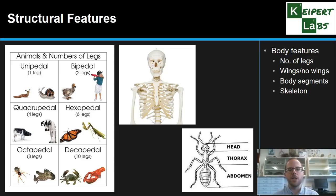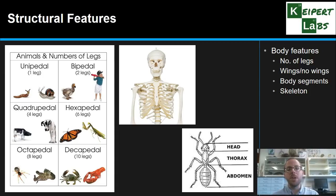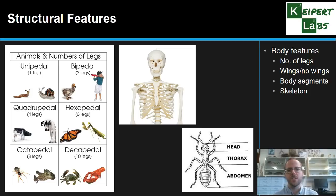Some of the structural features we might use are things to do with the way the body is put together — the number of legs, whether things have wings or no wings, how many sets of wings, how many body segments, especially when we think about insects versus humans, the presence or absence of a skeleton, whether it's internal or external — like a crab might have versus us as human beings with an internal skeleton. The idea is that these are features that don't change over the lifetime of the organism.